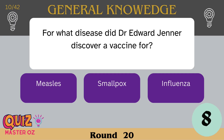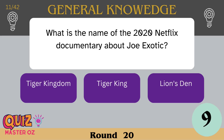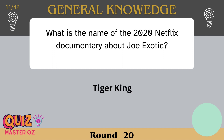For what disease did Dr Edward Jenner discover a vaccine? Smallpox. What is the name of the 2020 Netflix documentary about Joe Exotic? Tiger King.